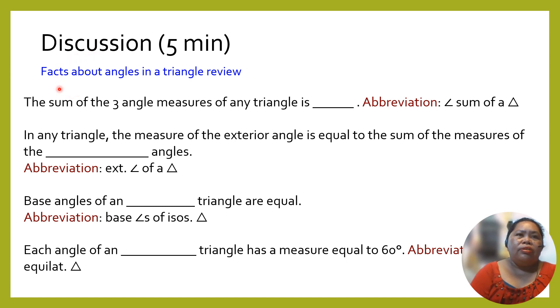Let's discuss these facts about angles in a triangular view. Sum of the three angle measures of any triangle is 180 degrees. Abbreviation is angle sum of triangle. In any triangle, the measure of exterior angle is equal to the sum of the measures of the opposite interior angles.